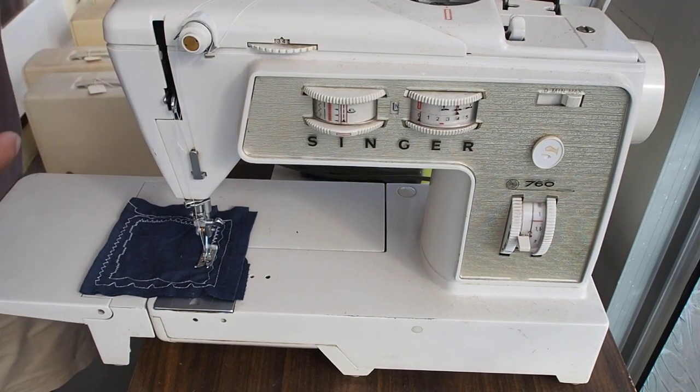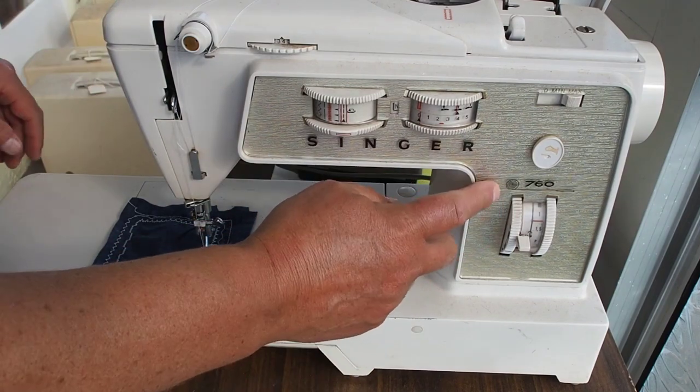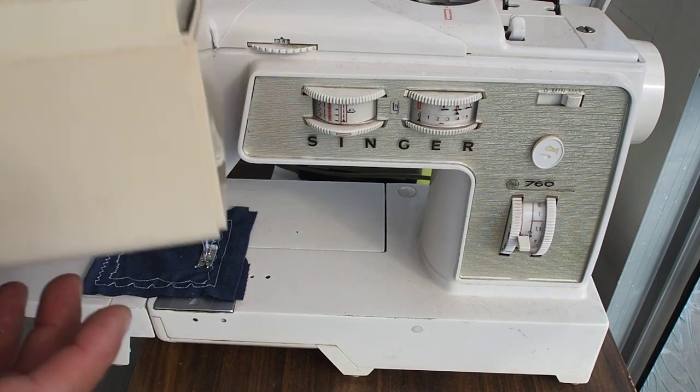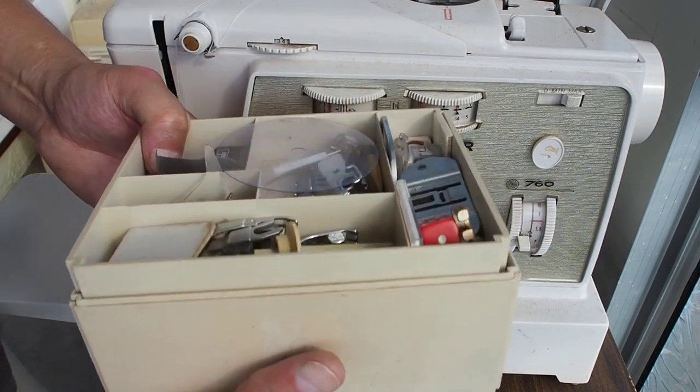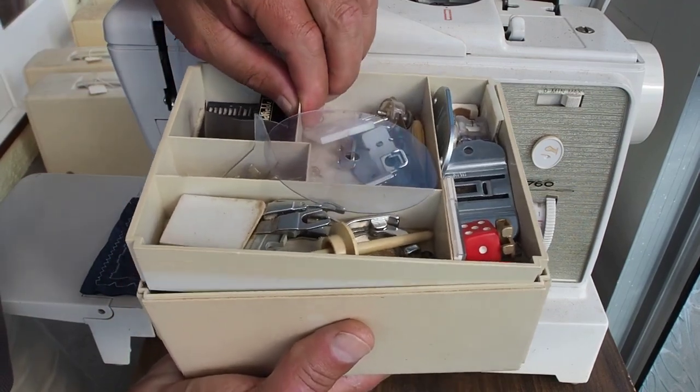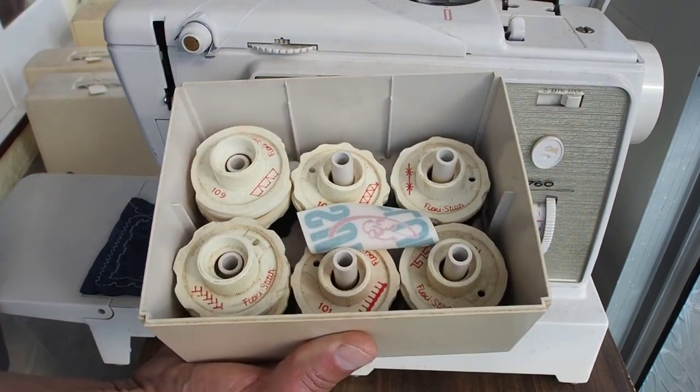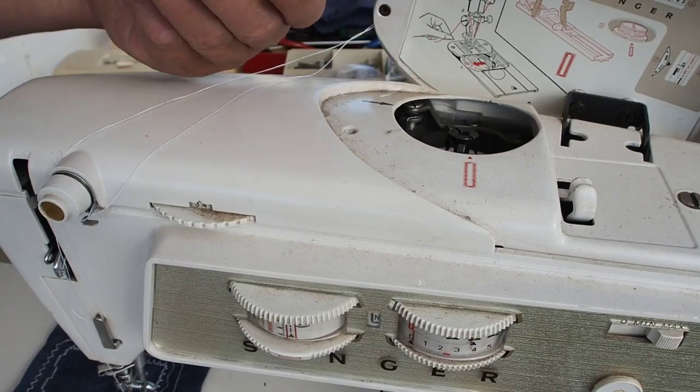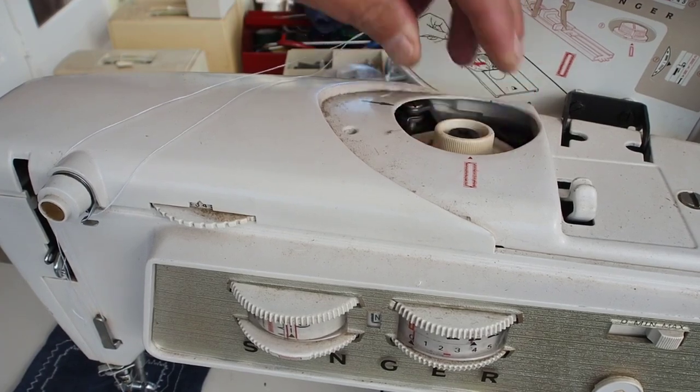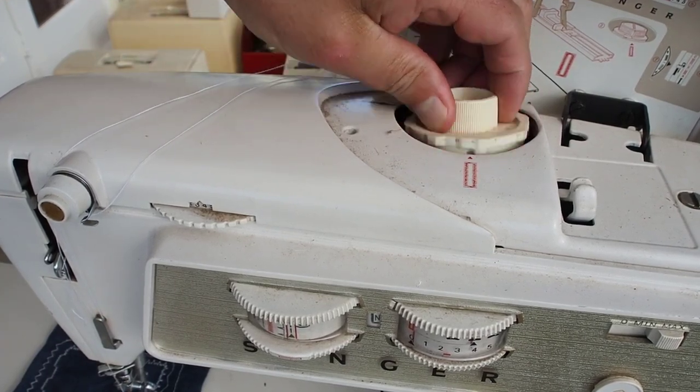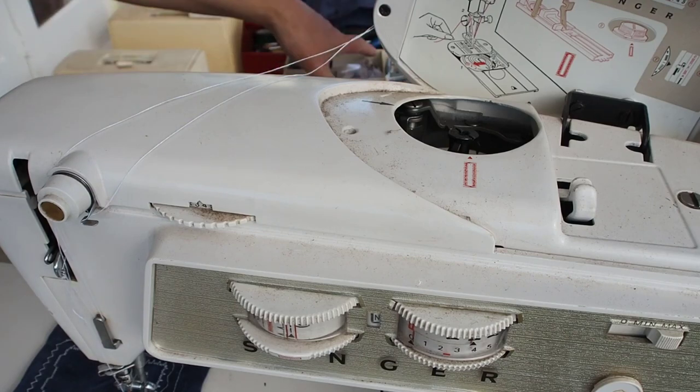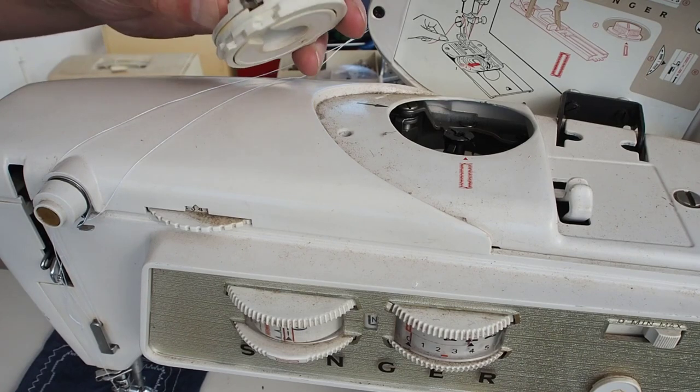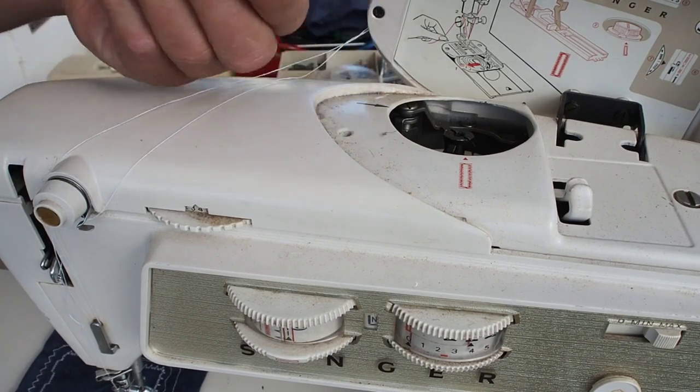I don't have the manual for this one, but the accessory box is a larger type box like that with a lift-out tray. The reason it's so large is because it's got the flexi stitch pattern discs there. The flexi discs just fit in the top there, and you can remove and reinstall other discs. Unlike the 726, you can interchange discs. That's the buttonholing disc.